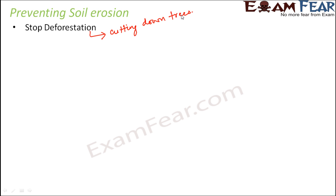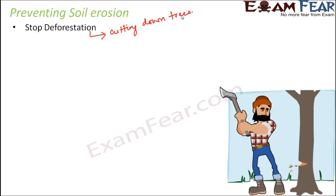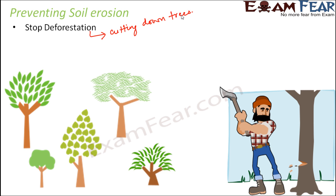If there are no trees, there is no one to hold the soil during heavy rain or heavy wind. We want somebody to hold the soil, so for that purpose we need to plant more and more trees. The more the number of trees, the less are the chances of soil erosion, because the roots of the plants will firmly hold the soil and will not allow the layers of soil to get washed away by wind or water.